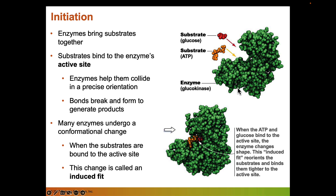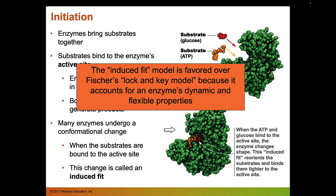During initiation, enzymes bring together specific substrates. For example, glucokinase binds glucose and ATP in its active site, helping these two molecules come together in a precise orientation to break some bonds and reform others to make a product. When substrates bind to the enzyme, the enzyme undergoes a conformational change — going from an open form to a clamped form around the substrates. This change in conformation is called the induced fit model, which is favored over the older lock and key model because it accounts for an enzyme's dynamic and flexible properties.